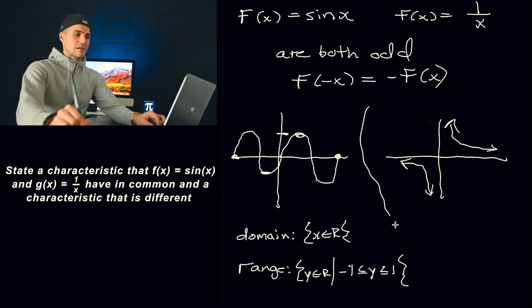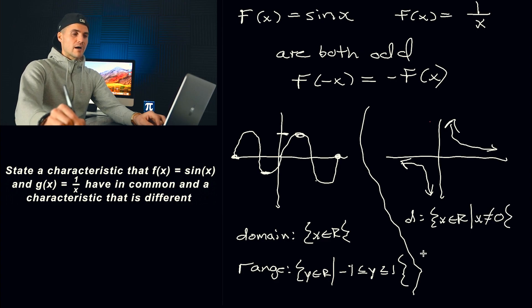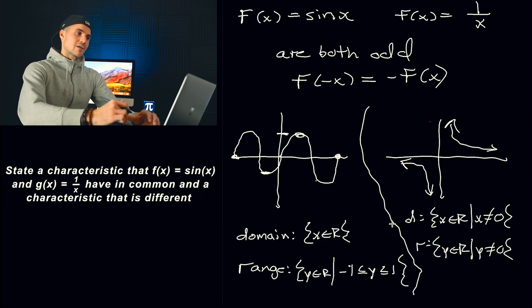So that's the domain and range for the sine x, while the domain for the 1 over x graph is just x∈ℝ. x cannot equal 0. It can't equal that vertical asymptote. The range is y∈ℝ. y cannot equal 0 as well, that horizontal asymptote. So the domain and ranges are totally different. So that's an example of a characteristic that's different.